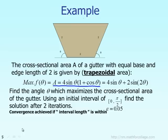We have the area of the trapezoid given by 4 sine theta times (1 plus cosine theta). Making use of the double-angle relationship from high school, the same area can be expressed in a different form. The last expression is preferred because it is a lot easier to take the derivative of that function. The question is: find the angle theta that will maximize the area of the gutter.